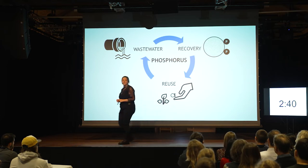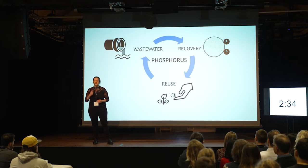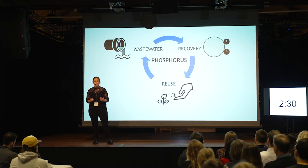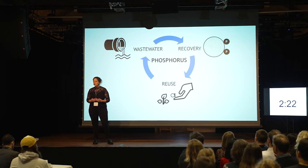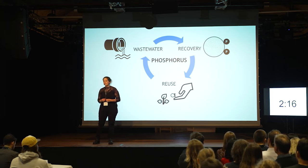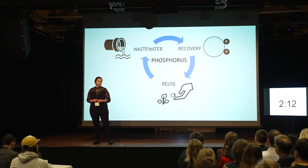And on this circular journey, we'll go through three steps. First, waste water — it's a resource. It contains nutrients such as phosphorus, and phosphorus is very important for plant growth and for our food production. But the majority of phosphorus fertilizers are extracted and mined from phosphate rock reserves, and these reserves are limited. And currently, the world is running low on phosphorus.